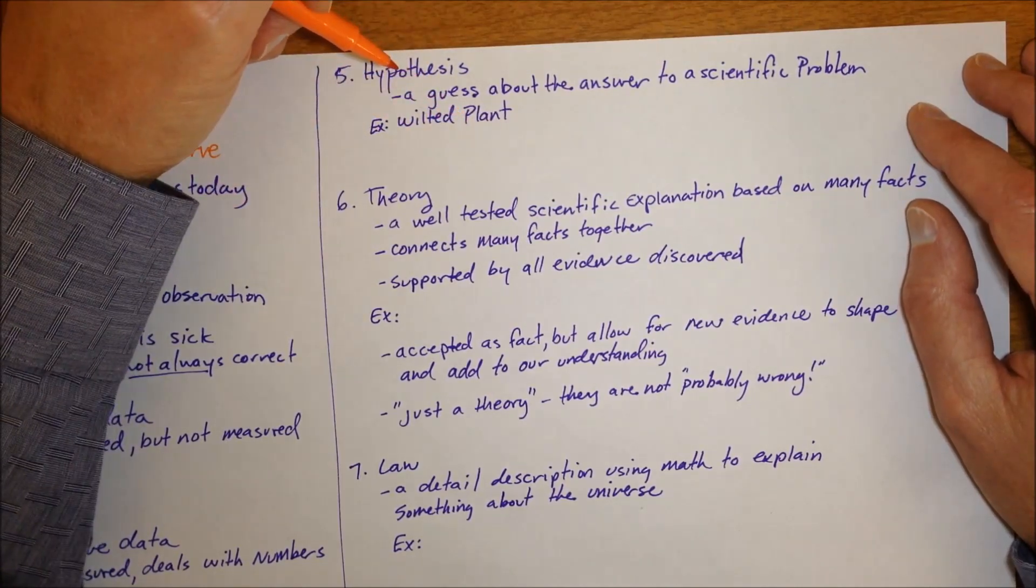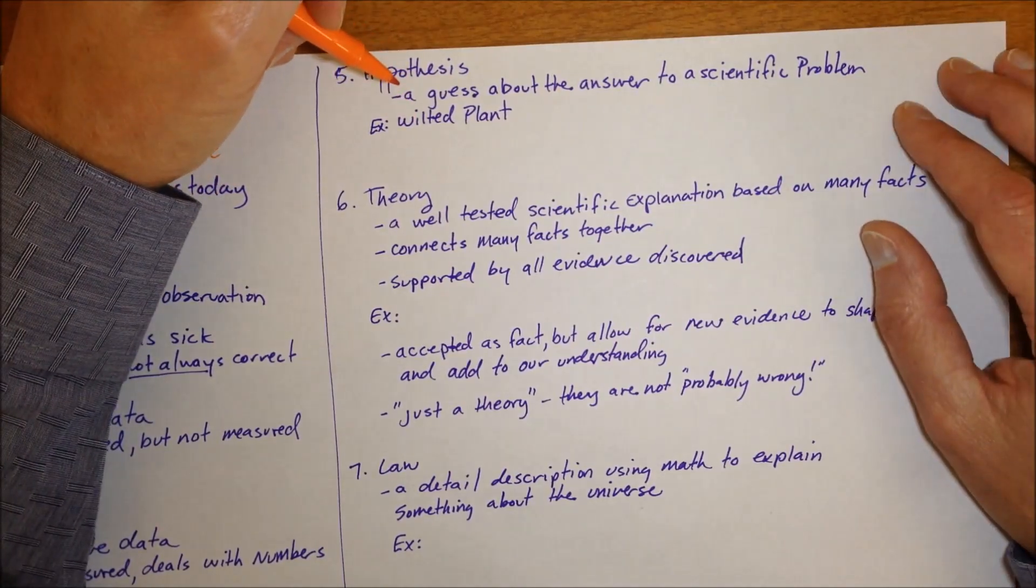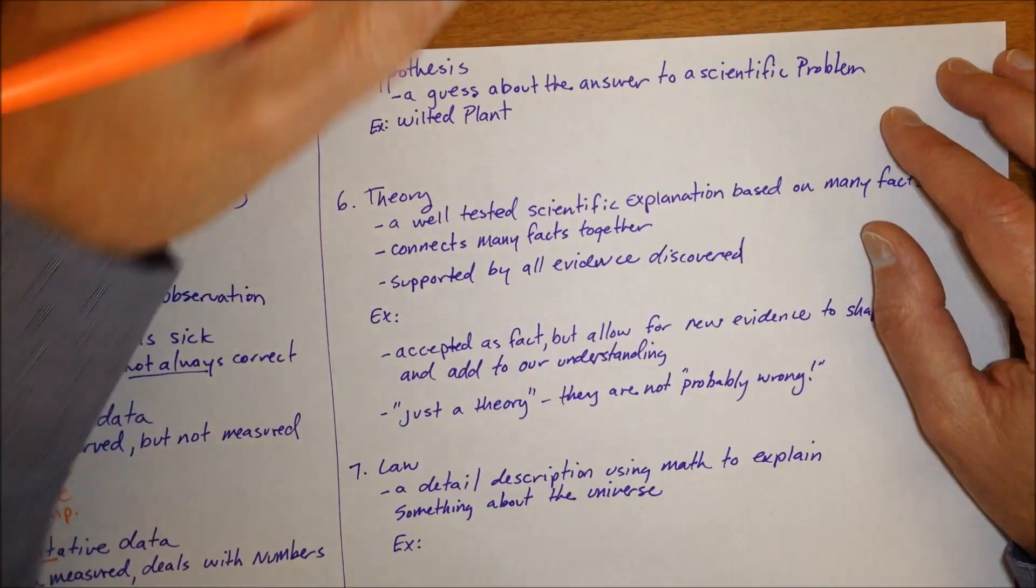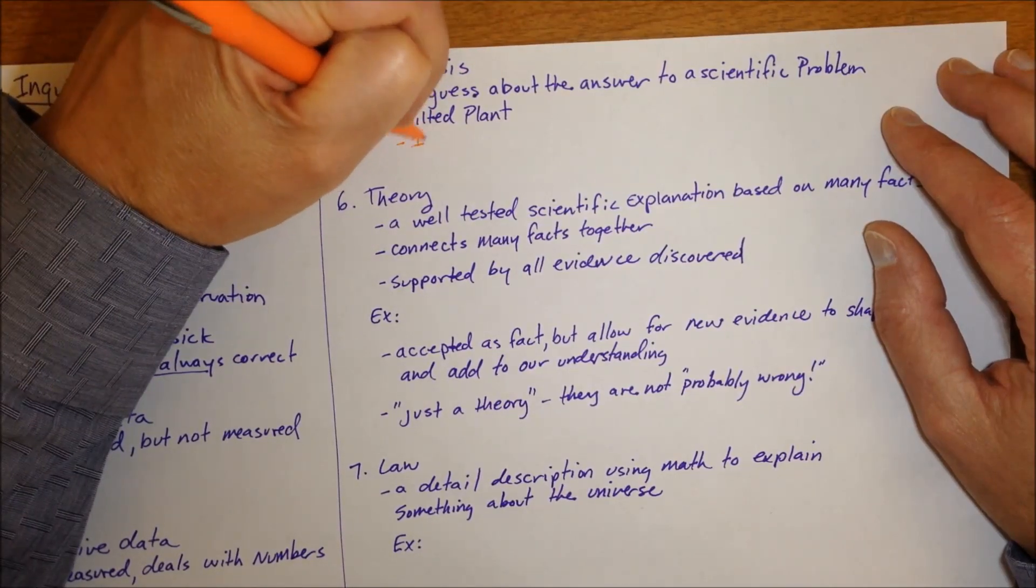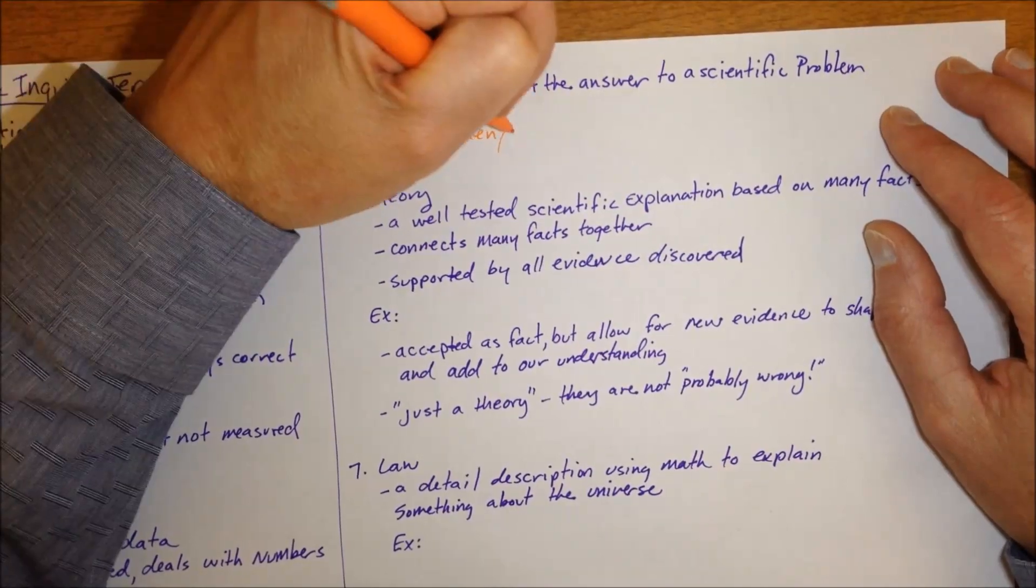For example, if you have a wilted plant, you might hypothesize that it needs water in order to grow well. The way we write hypotheses in science are generally if, then, because statements.